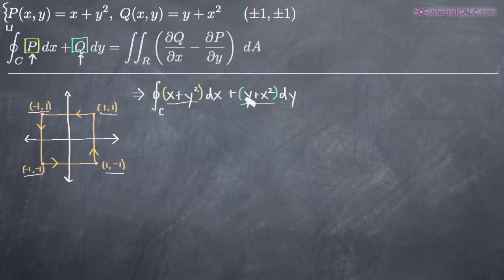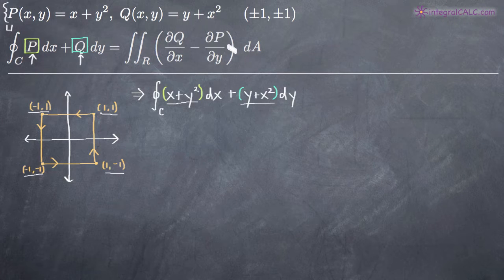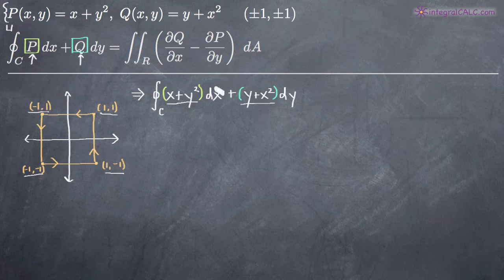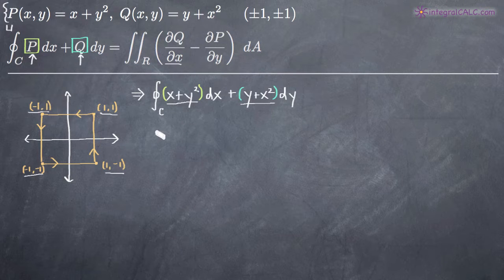Once we have those two functions, we're off to the races because all we need to do is identify the partial derivative of Q with respect to x and the partial derivative of P with respect to y, then set up the limits of integration and we'll be able to move forward with our double integral for Green's theorem. So the first thing we're going to want to do is find the partial derivative of Q with respect to x.